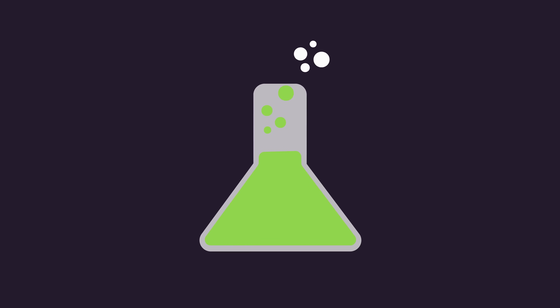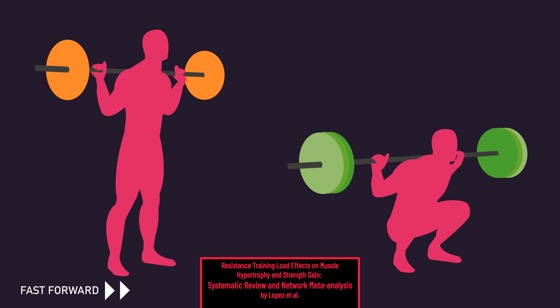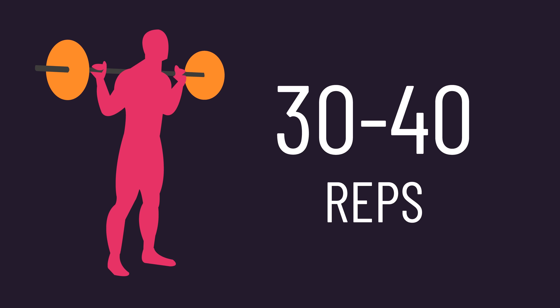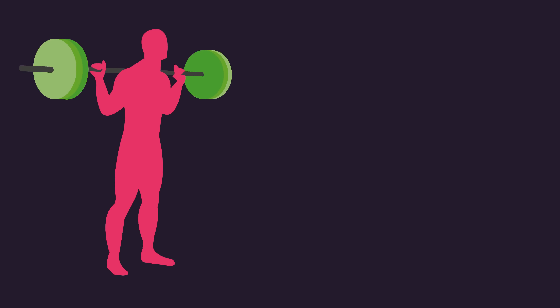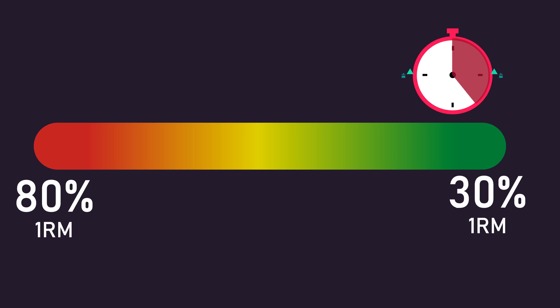The research on heavy versus light loads provides even more evidence. Numerous studies indicate that so long as reps are performed to or close to failure, loads between 30% and 80% 1 rep max are similarly effective for muscle hypertrophy. With 30% 1 rep max loads, individuals generally perform up to 30-40 reps, while with an 80% 1 rep max load they perform 7-12 reps. Time under tension would be much greater with lighter loads, yet they do not evoke any more hypertrophy than heavier loads.